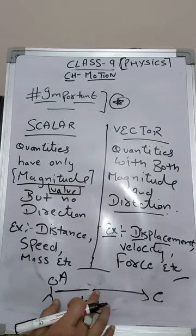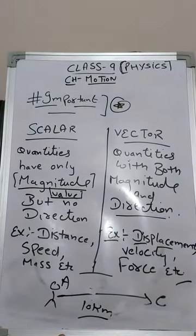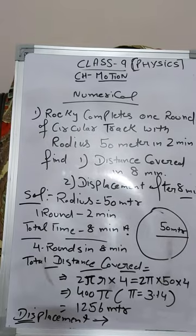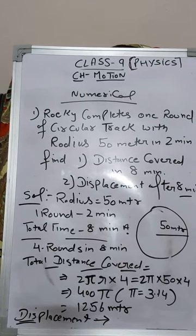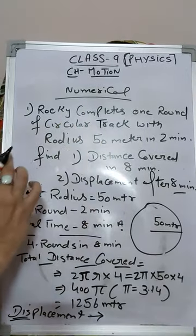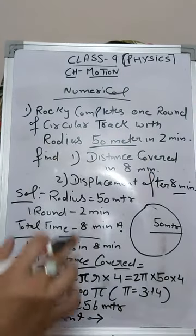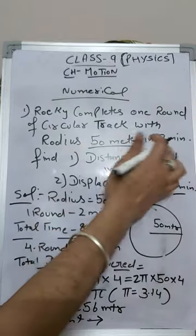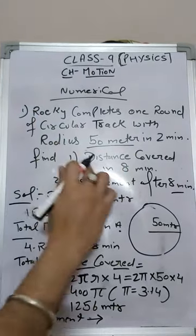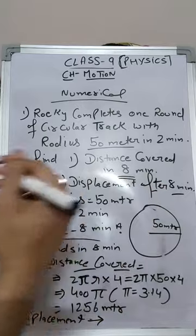Now we will solve a numerical based on distance and displacement. Rocky completes one round of a circular track with radius 50 meters in two minutes. You have to find the distance covered in eight minutes and the displacement after eight minutes.